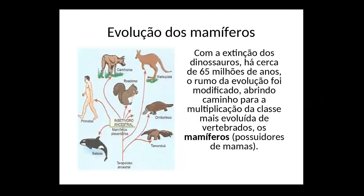O estudo indica que os mamíferos evoluíram de um ancestral chamado terapsídio, que é um réptil diferente dos répteis que originaram os répteis atuais. Quando os dinossauros foram extintos pelo meteoro, já existiam pequenos mamíferos. Só que eles não conseguiam dominar porque os grandes répteis dominavam. A partir do momento que os grandes répteis foram extintos, esses pequenos mamíferos conseguiram conquistar melhor o ambiente e evoluíram.